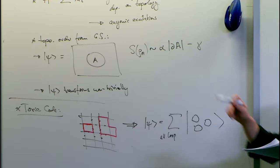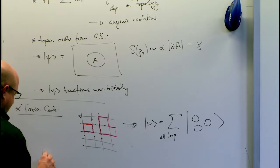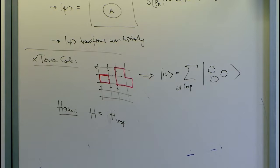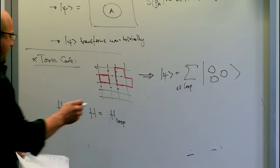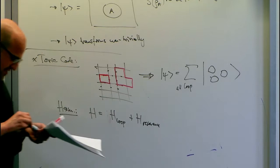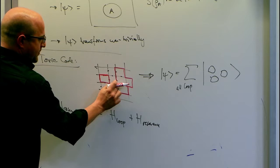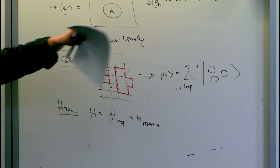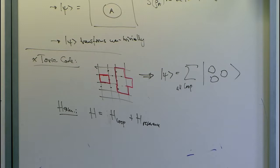This should be a uniform superposition over all possible loop patterns. One can find a Hamiltonian for that. The idea is the Hamiltonian has two types of terms: one that gives an energy penalty if there are non-closed loops (if the number of ones adjacent to an edge is not even), and a second resonance term that says if I have a loop, I can deform it by flipping part of the loop into a different configuration. This enforces that loops appear with equal weight whenever they can be deformed by such a move.